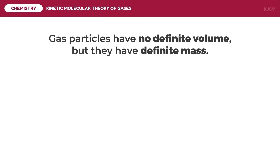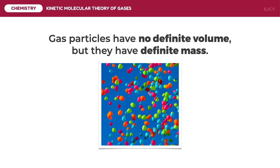This postulate also tells us that gases have definite mass which depends on their atomic weights. We can observe this on balloons. Helium balloons rise in the atmosphere while other balloons, like those inflated by blowing or mechanical pumping, are pulled down by gravity. This is because helium is lighter than the gas particles in our atmosphere, which is mostly nitrogen, oxygen, and carbon dioxide — gases which are heavier than helium.